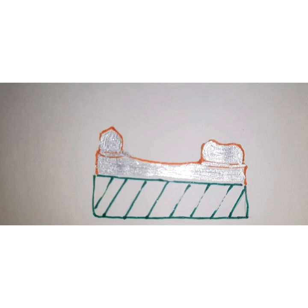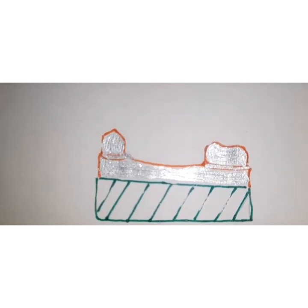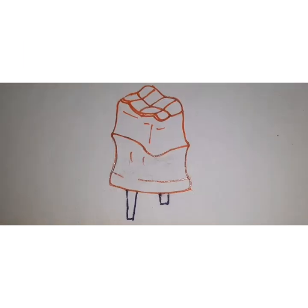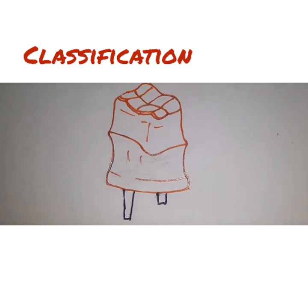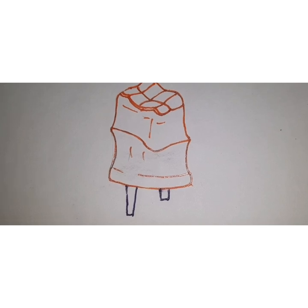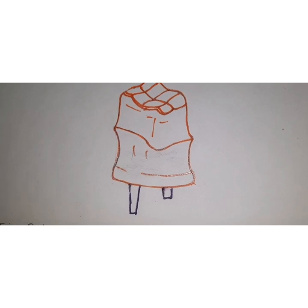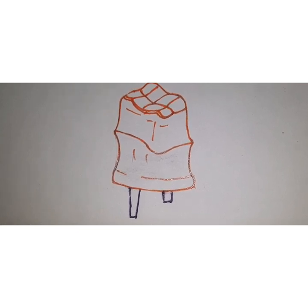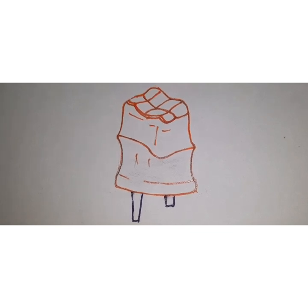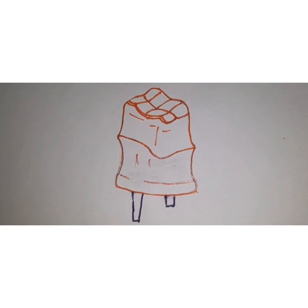Now we will see what are the various die systems used in fixed prosthodontics. Die systems can be classified on the basis of their design as: working cast with a separate die, and working cast with a removable die. In working cast with a removable die there are four types: double pin systems (straight or curved), the Pindex system, the Dialo system, and the Acutrack system.